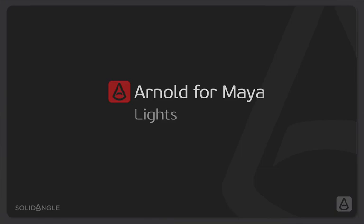Hi, I'm Ben Greasley and in this video we're going to be looking at how Arnold works with lights. We're going to be looking at the default Maya lights that Arnold is able to render and the specific Arnold lights that we have built in. We're going to be mainly looking at the Arnold menu and how we can work with decay rates, exposures, and samples to get the best-looking lights in our render, starting with a simple point light.